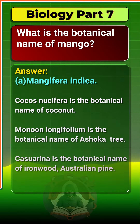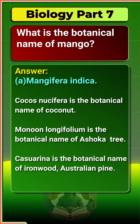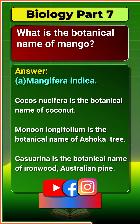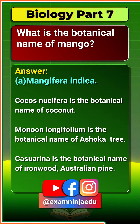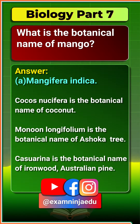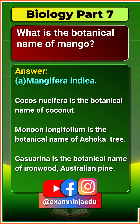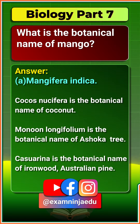The answer is option A, Mangifera indica. Cocos nucifera is the botanical name of coconut. Monon longifolium is the botanical name of the asoka tree. Casuarina is the botanical name of ironwood, also known as Australian pine.